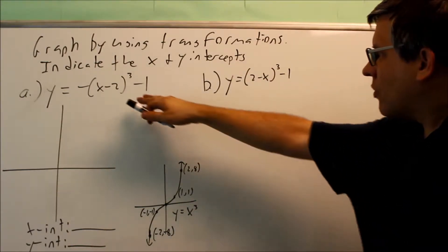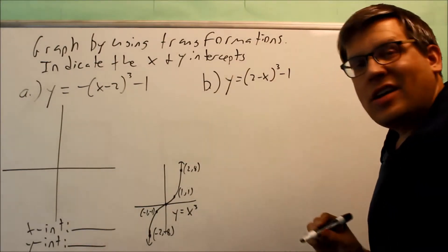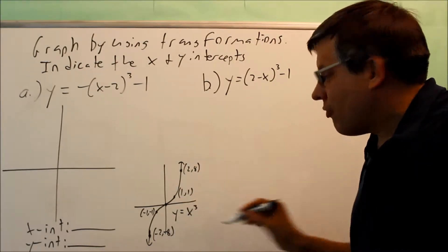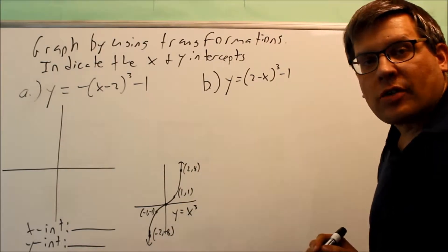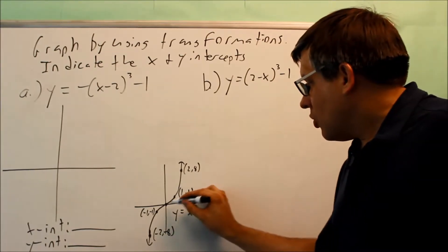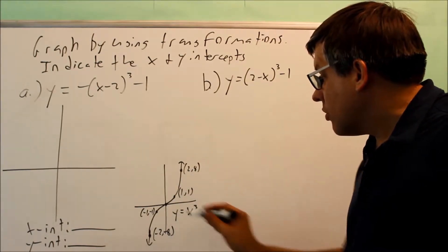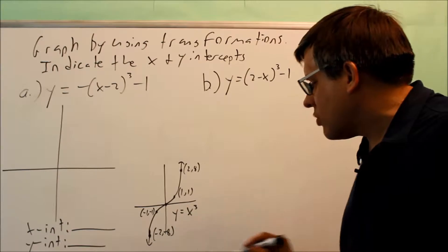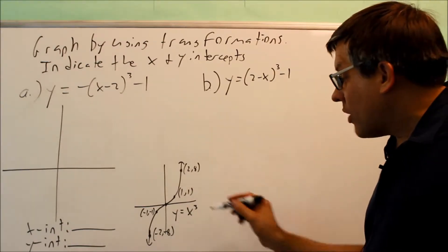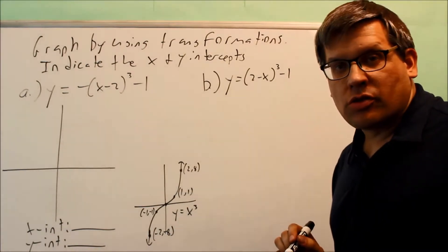These transformations have to do with the base graph of x cubed. Here's the base graph for y equals x cubed, and here are the key points labeled: (1, 1), (2, 8), (-1, -1), and (-2, -8). It also goes through (0, 0).